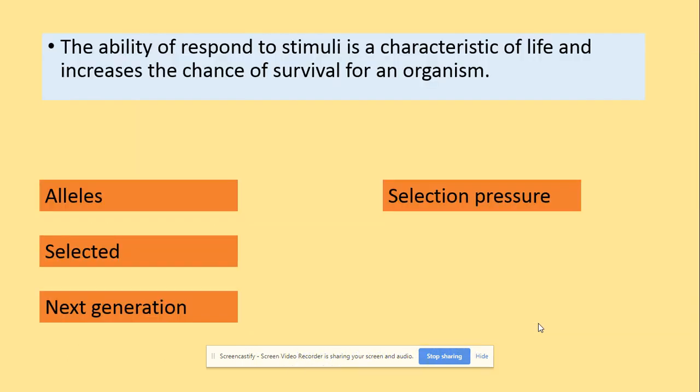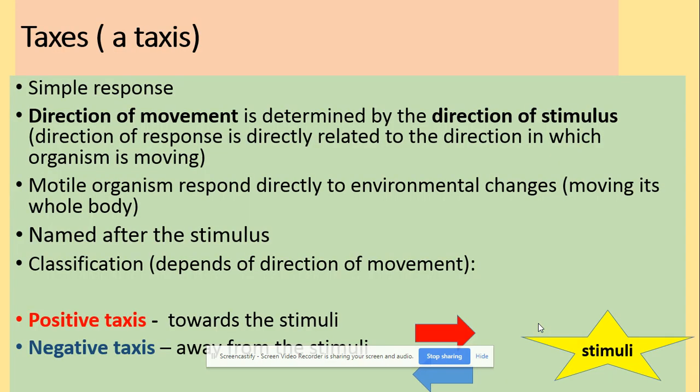The ability to respond to stimuli is a characteristic of life and will increase the chance of survival of the organism. You can easily link this topic to selected alleles — the most advantageous alleles will be passed on to the next generation, based on the selection pressure that leads to the passage of those selected alleles.